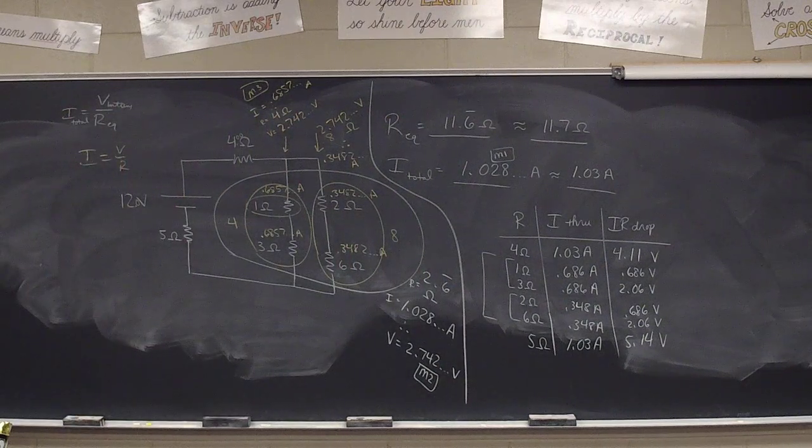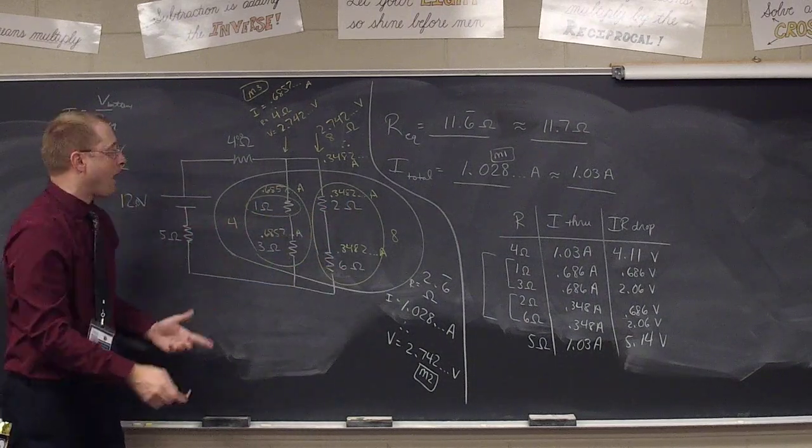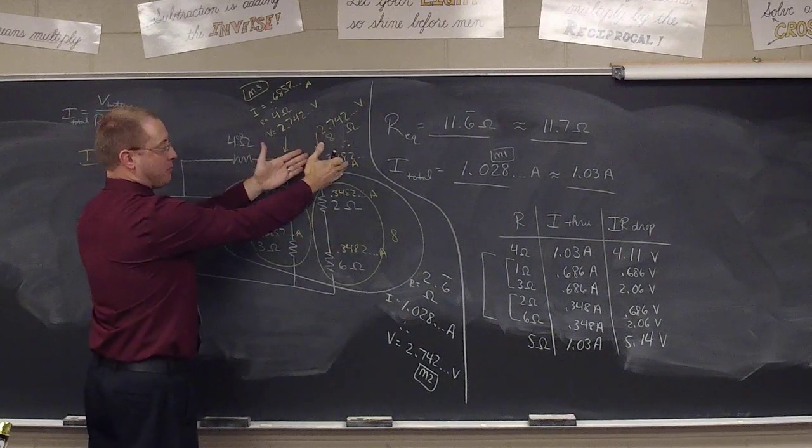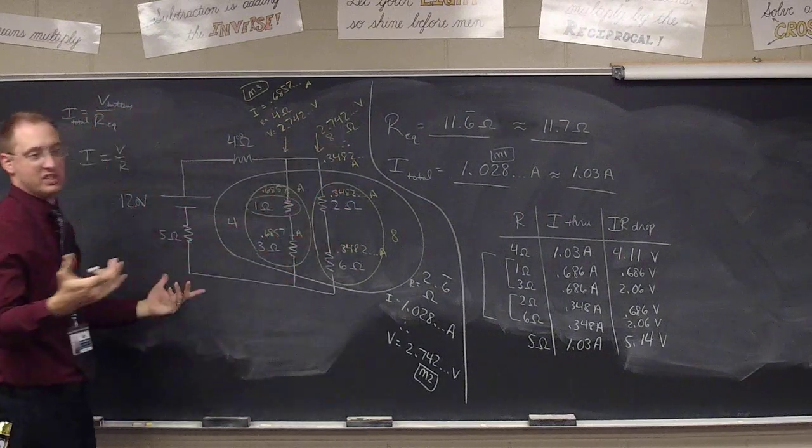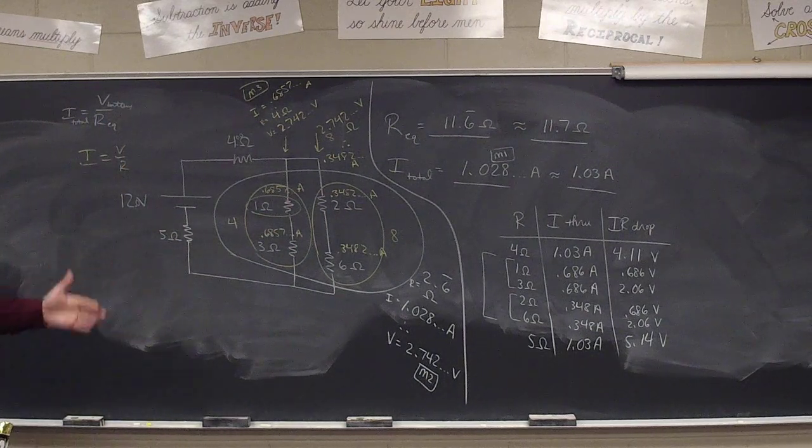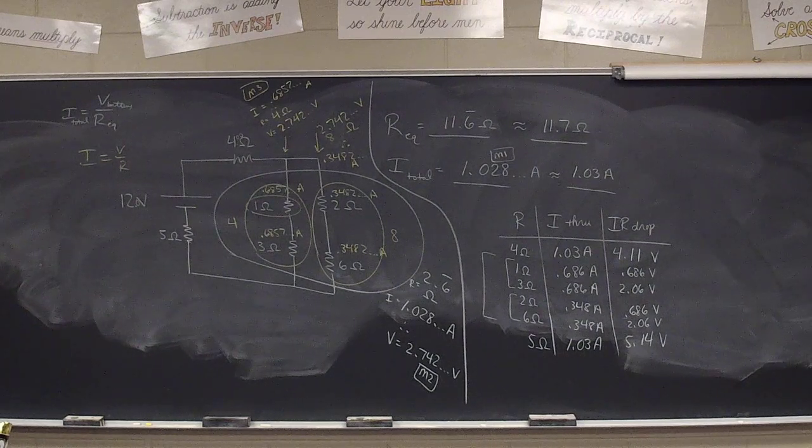Incidentally, 2.06 volts is like, whoa, that's weird. Well, each of these resistances is twice as big. And so because there's twice as much resistance, there's half as much current. Half as much current times twice as much resistance equals the same voltage. So that's why the numbers happen to mirror each other here. That's not going to be the case in every problem. It just happened to be the case here. Questions on this?